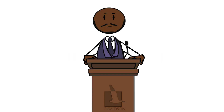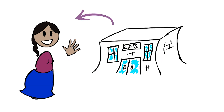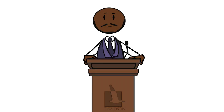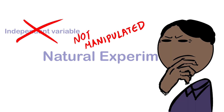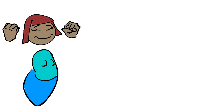A natural experiment is conducted outside of a lab, as with the field experiment. However, unlike with field experiments, with natural experiments the independent variable is not manipulated by the researcher — it is only observed in regard to how it affects the dependent variable. A strength of this method is the ability to observe variables which would be considered unethical to manipulate. Another strength would be ecological validity, as these experiments tend to be less artificial than lab experiments.